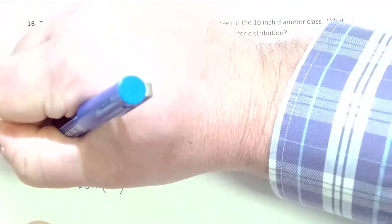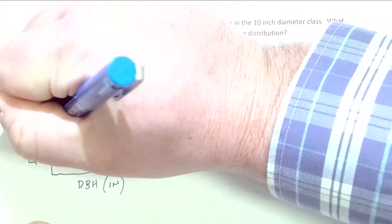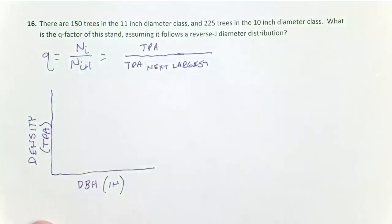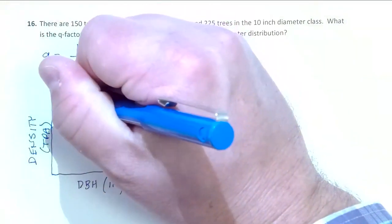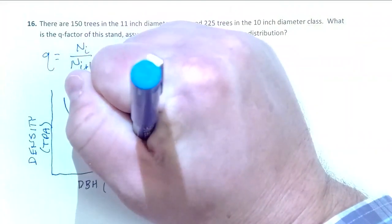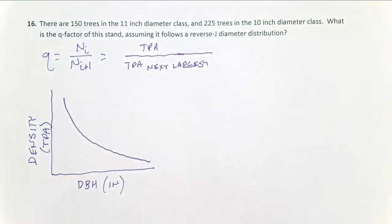And so if this is a balanced all-age stand, an uneven-age stand, it could be characterized by what we call the reverse J curve. So our diameter distribution where we have more small trees and fewer and fewer trees as they get larger and larger, simply because big trees take up more space.